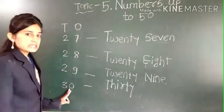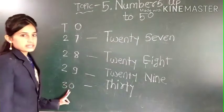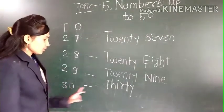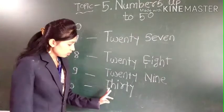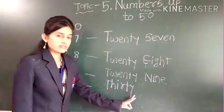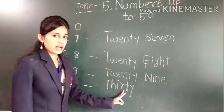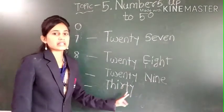30. 3, 0, 30. Zero ones and 3 tens. 30. 30's spelling is T-H-I-R-T-Y, 30. T-H-I-R-T-Y, 30.